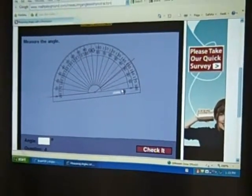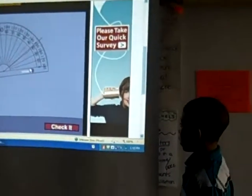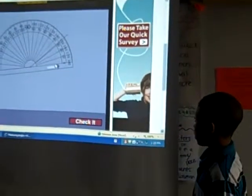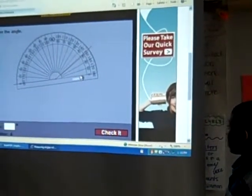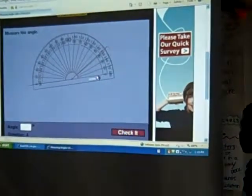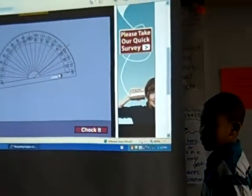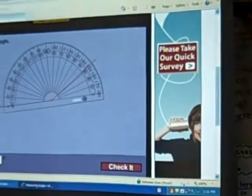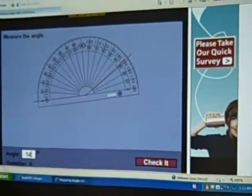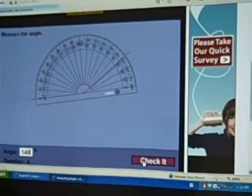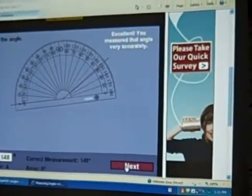Right in there? All right. Remember what you said. It's an obtuse angle. Would you use the top scale or the bottom scale? The top scale. So what degree measurement do you think we are looking at here? 148. All right. You're thinking 148? Let's give it a whirl. Nice job.